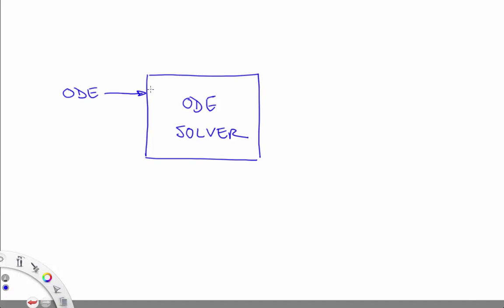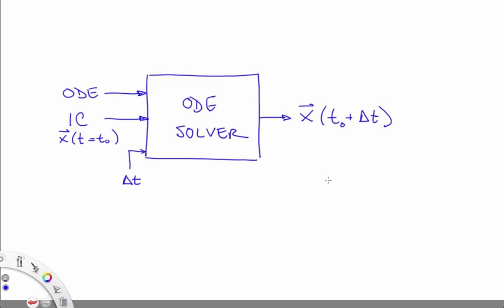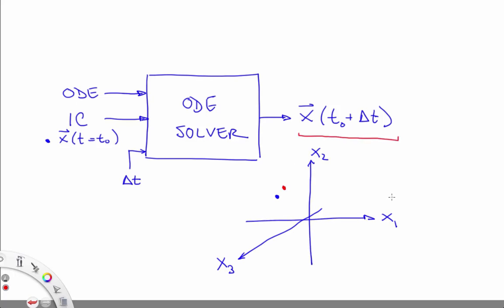That's what an ODE solver does. The ODE solver takes an ODE, an initial condition, and a time step delta-t, and it gives you back an estimate of what the state will be at t0 plus delta-t. In the state space, you can interpret that this way: the ODE solver is taking the blue point — the x at t equals t0 — and figuring out what the next point will be.